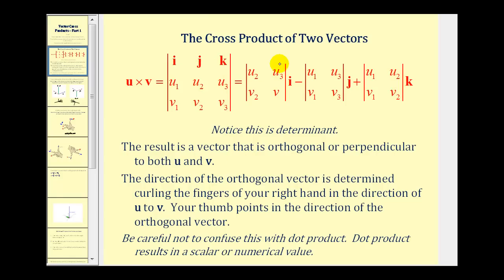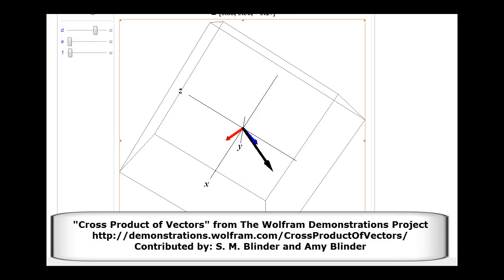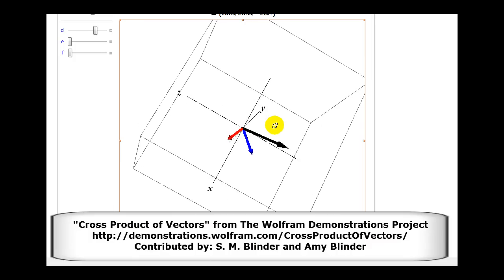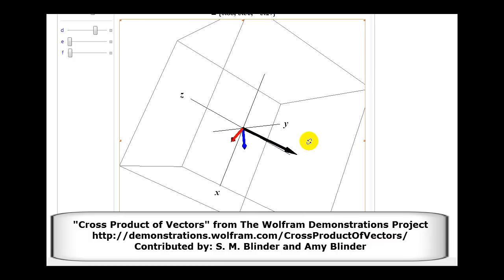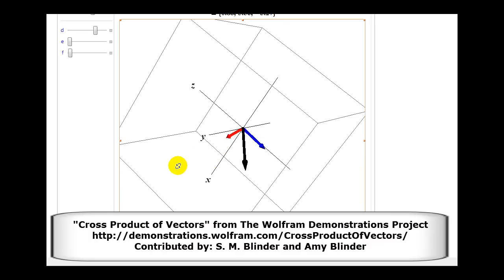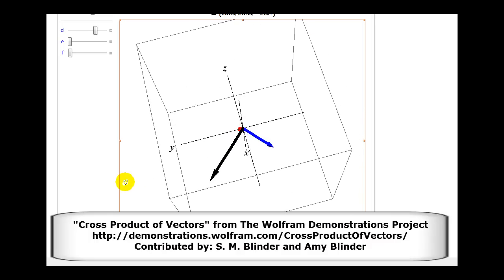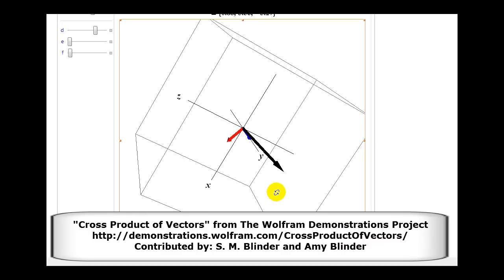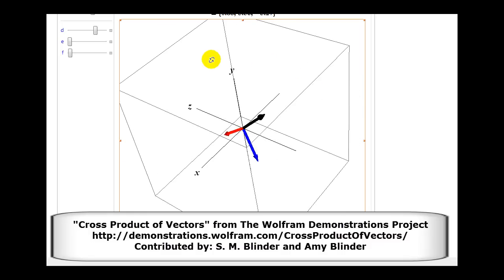What's special about the cross product of two vectors is that the result is another vector that is orthogonal, or perpendicular, to both vector u and vector v. Here's an illustration where the black vector — the cross product — is perpendicular to both the red vector and the blue vector. So the black vector is the cross product of u and v.